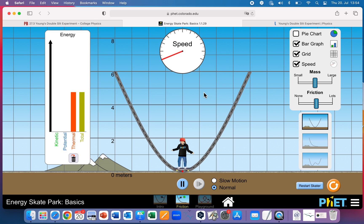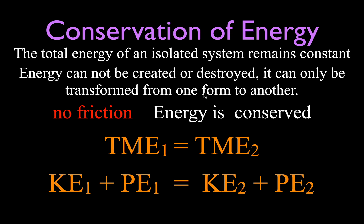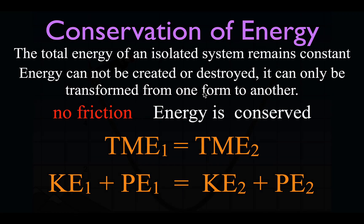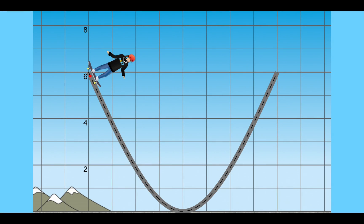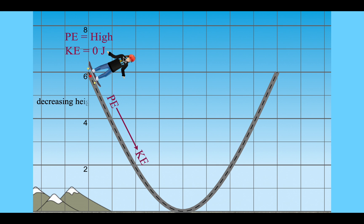Let's summarize what we saw. At the top, the skater had the highest potential energy and no kinetic energy — no velocity means no kinetic energy, greatest height means highest potential energy. Then at the bottom, the potential energy is converted to kinetic energy. Why? Because height is decreasing and speed is increasing.